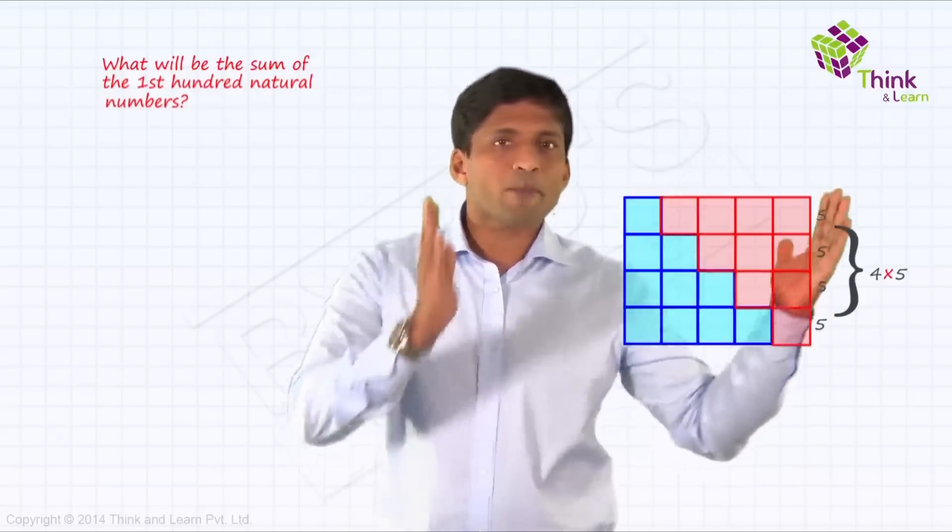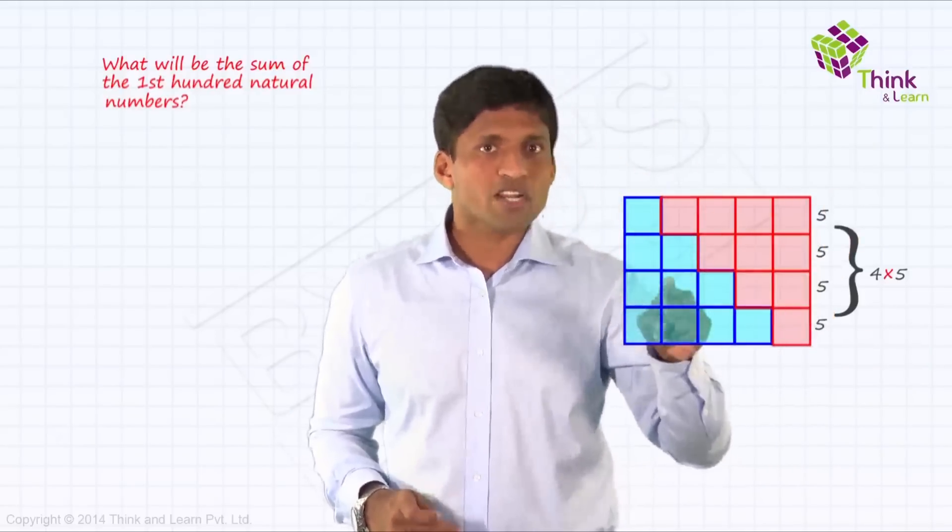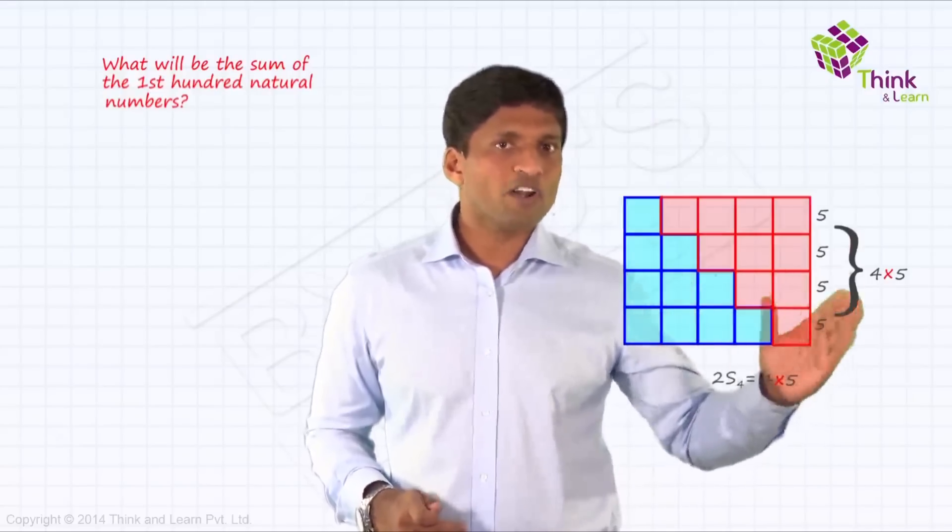Now, what is happening? We are taking it 2 times. 1, 2, 3, 4, we are taking it 2 times in the reverse order, second time. So 2 times S4 is 4 into 5.